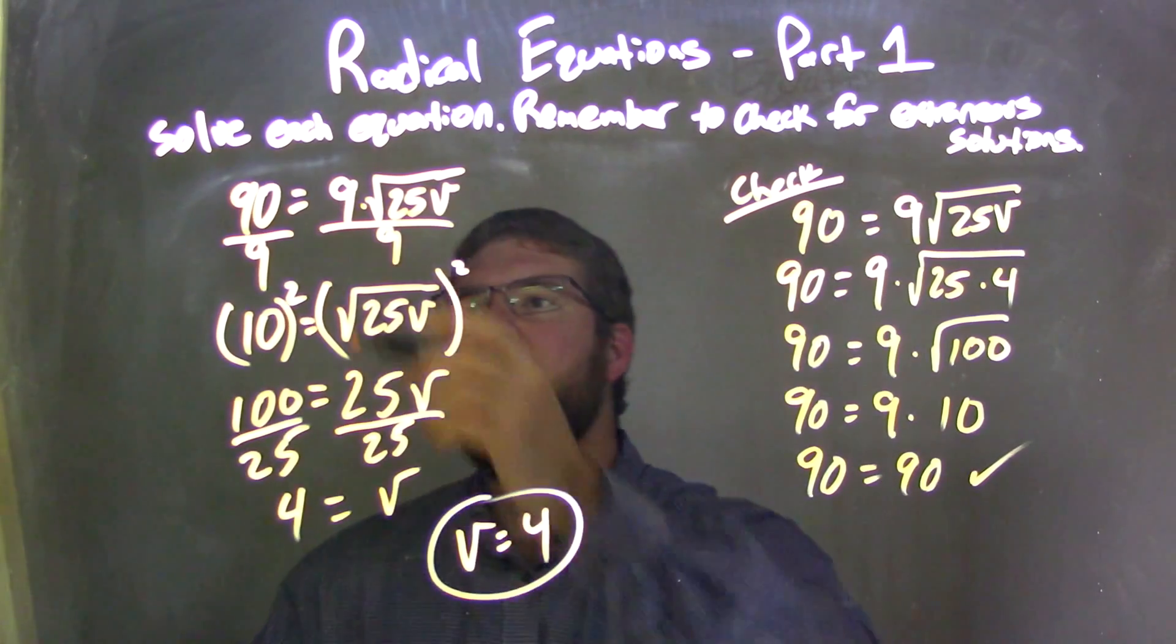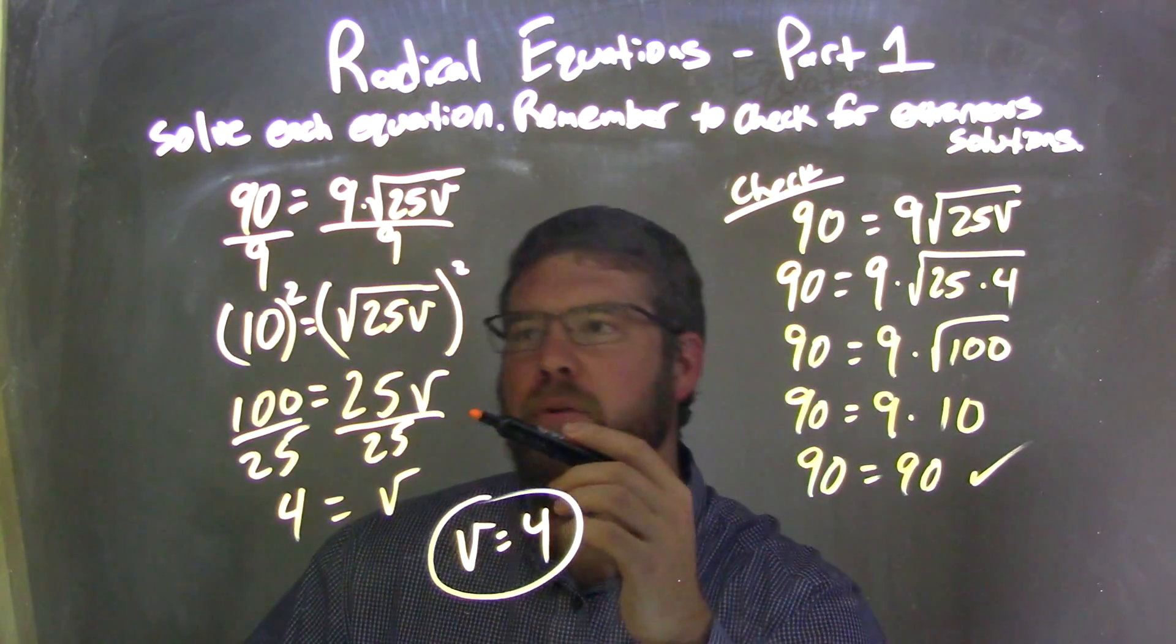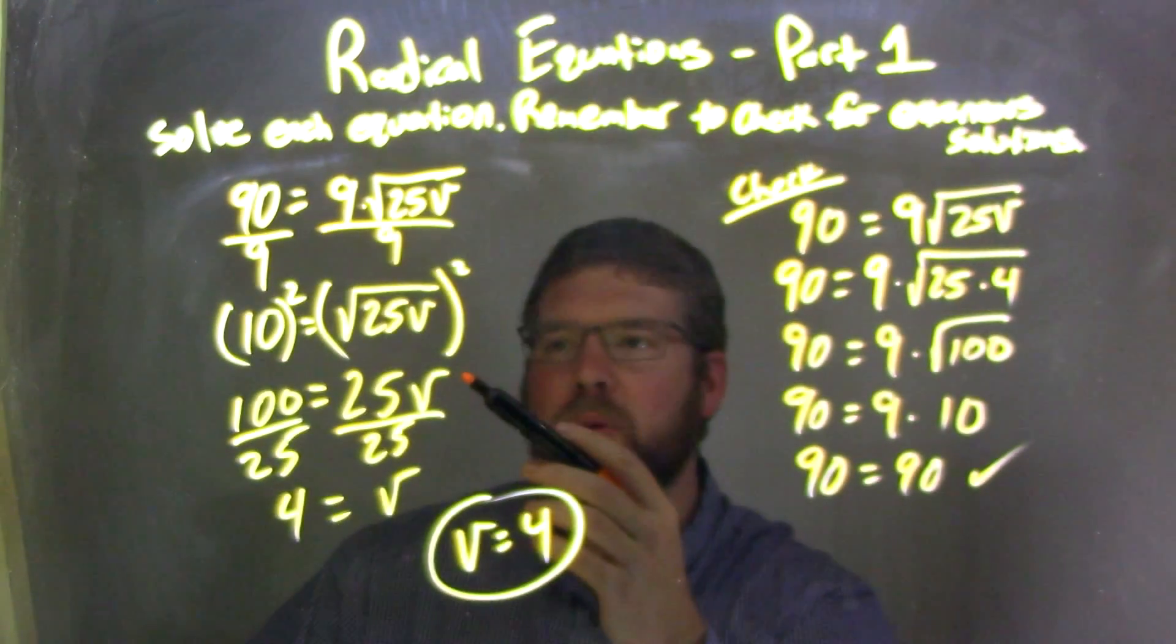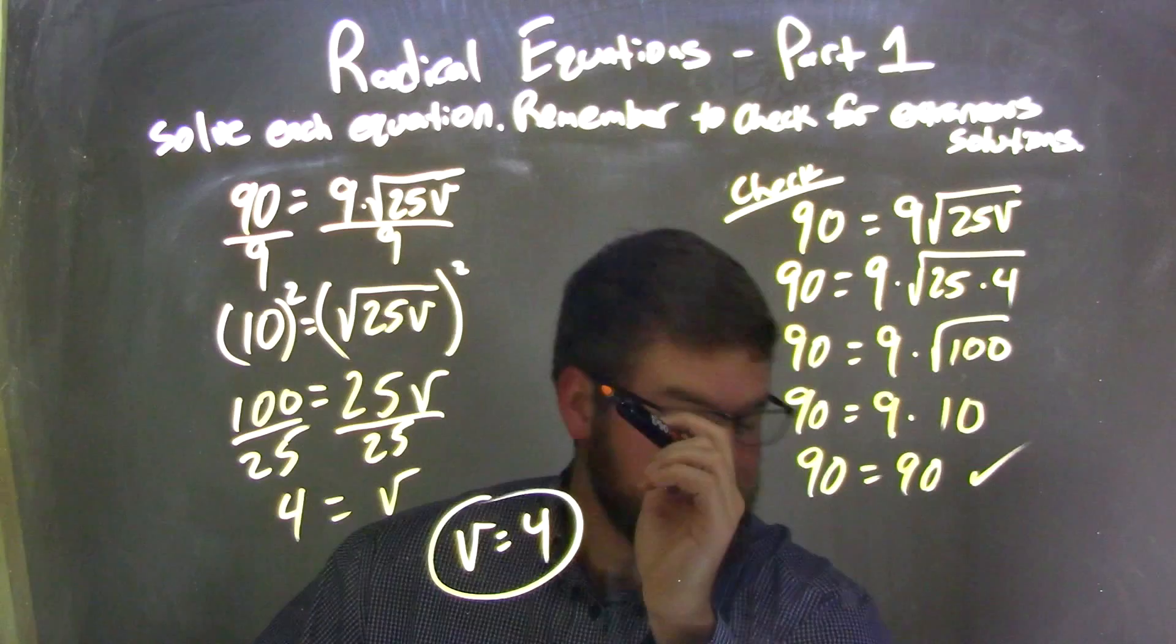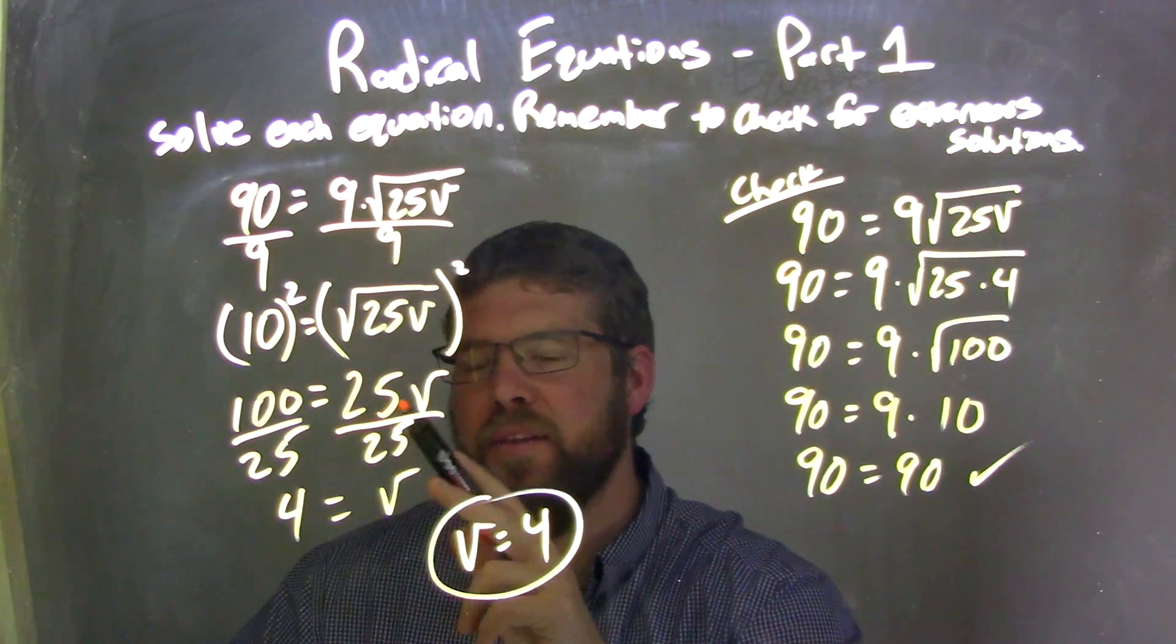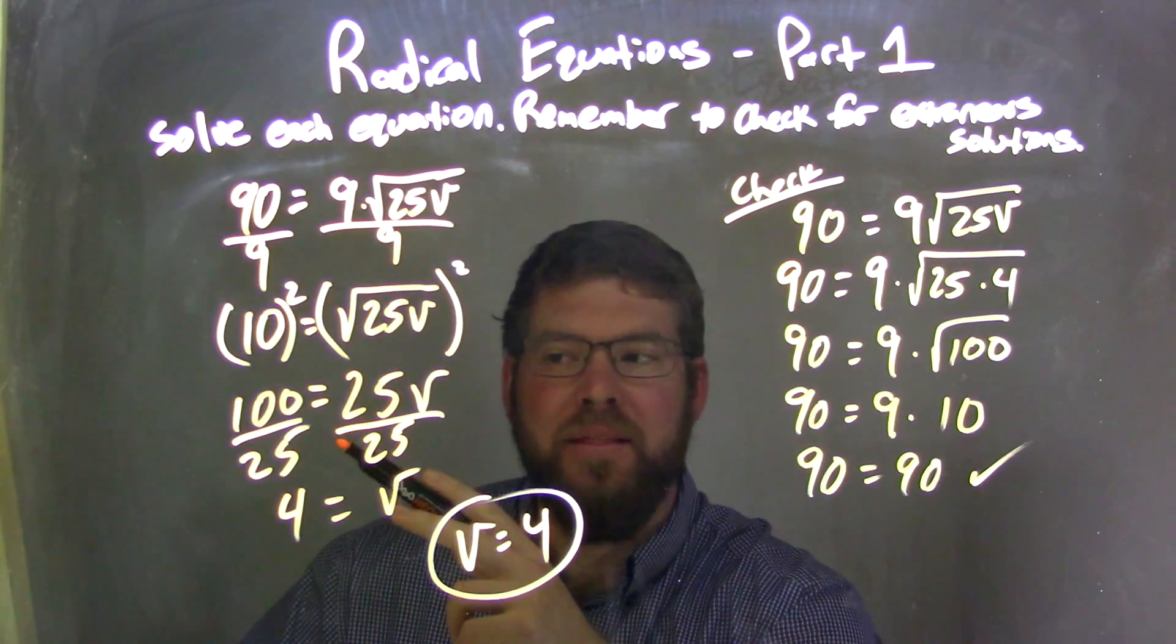Let's recap. We started with 90 equals 9 times square root of 25V. Divided by 9 on both sides, got 90 divided by 9 being 10 on the left, and square root of 25V on the right. Square root is isolated. So now I can square both sides. Squaring both sides leaves 25V on the right and 10 squared equals 100 on the left.